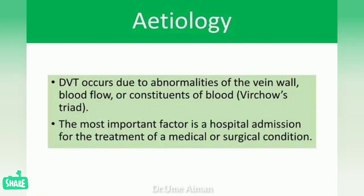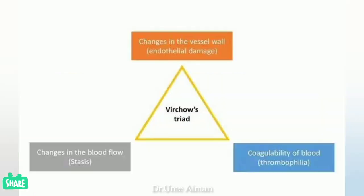The main reason why DVT occurs is due to abnormalities of the vein wall, blood flow, or constituents of blood — known as Virchow's Triad. The triad has three components: first, changes in the vessel wall causing endothelial damage; second, coagulability of blood leading to thrombophilia; and third, changes in blood flow causing stasis, which leads to thrombosis of deep veins. These three combined form Virchow's Triad.